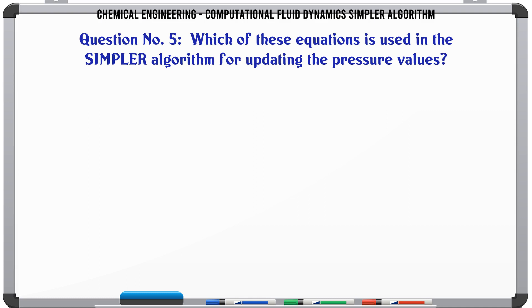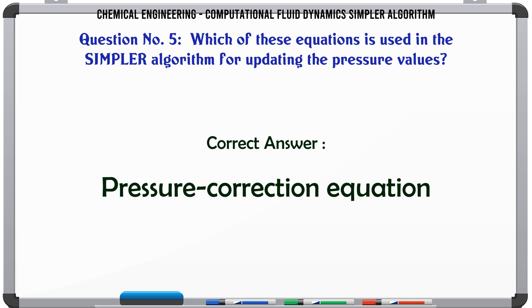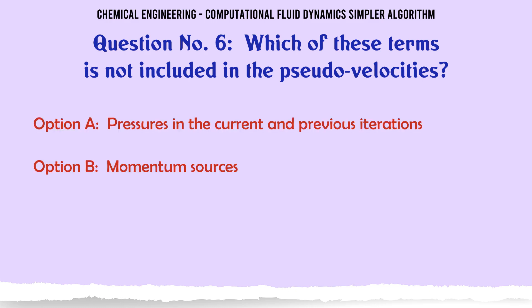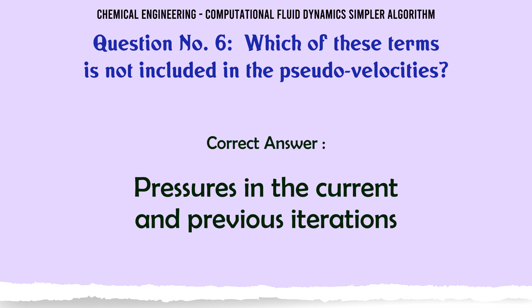The correct answer is: Pressure correction equation. Which of these terms is not included in the pseudo-velocities? A. Pressures in the current and previous iterations, B. Momentum sources, C. Neighboring velocities, D. Coefficients of the current velocities. The correct answer is: Pressures in the current and previous iterations.